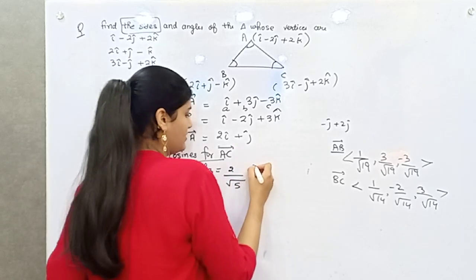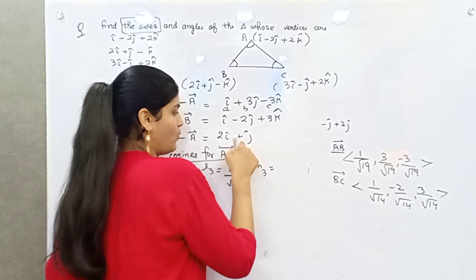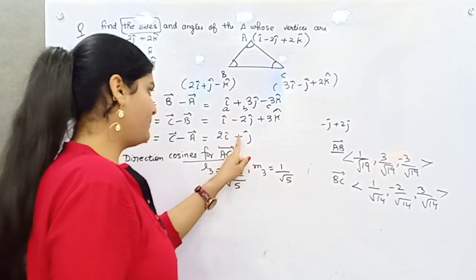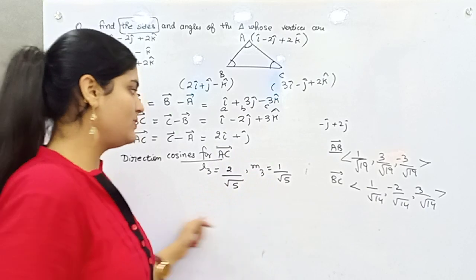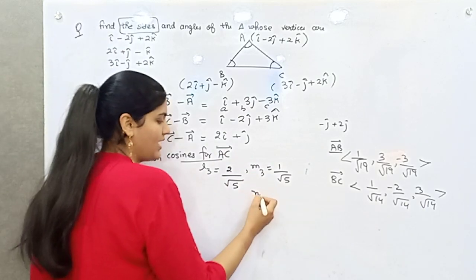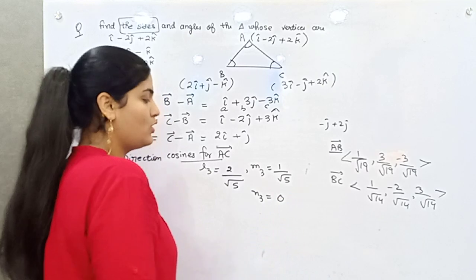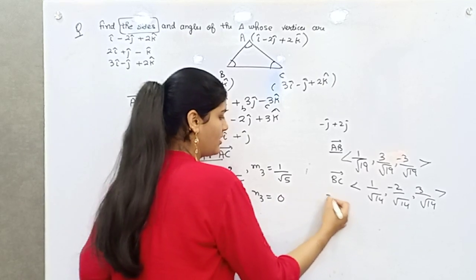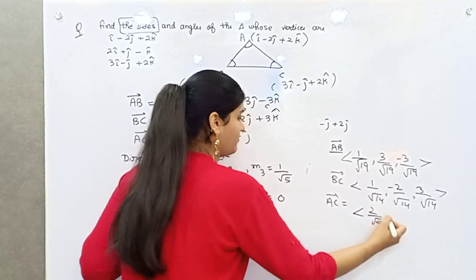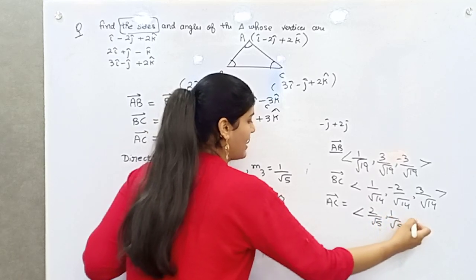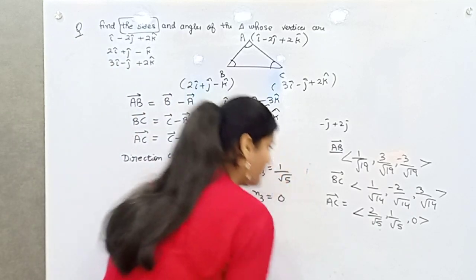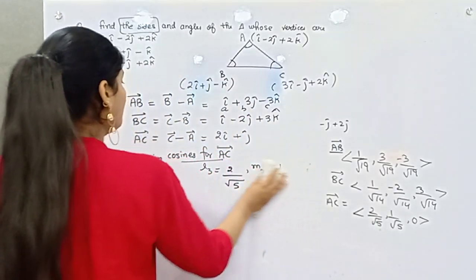So L3 = 2/√5, M3 = 1/√5, and N3 = 0 since the k component is absent. Therefore, the direction cosines for AC are 2/√5, 1/√5, and 0. Moving on, the main part is to find the angles of the triangle — angle A, B, and C.